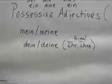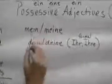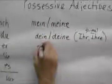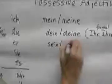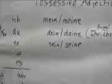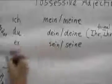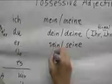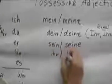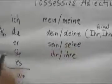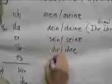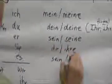Now, er, he has his book. So his becomes sein or seine. She has her book. So her would become ihr or ihre. It would be sein or seine.